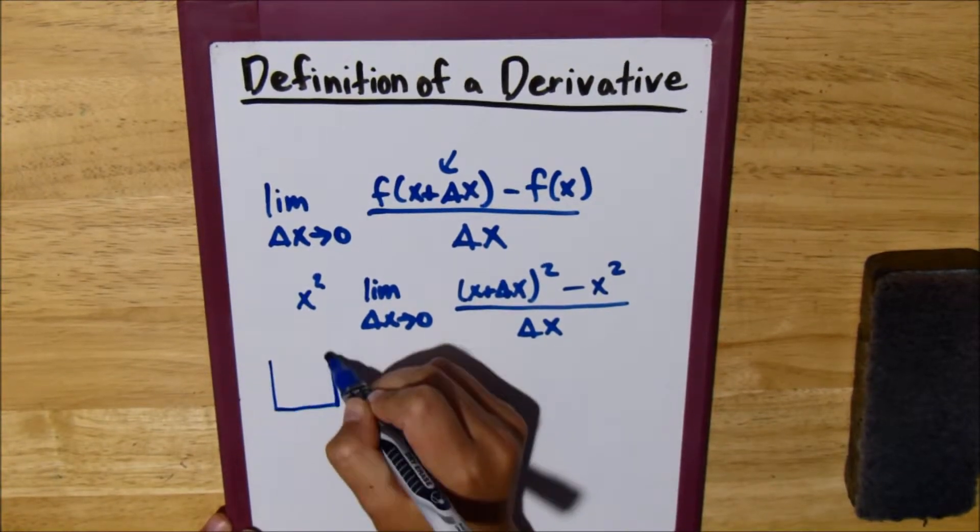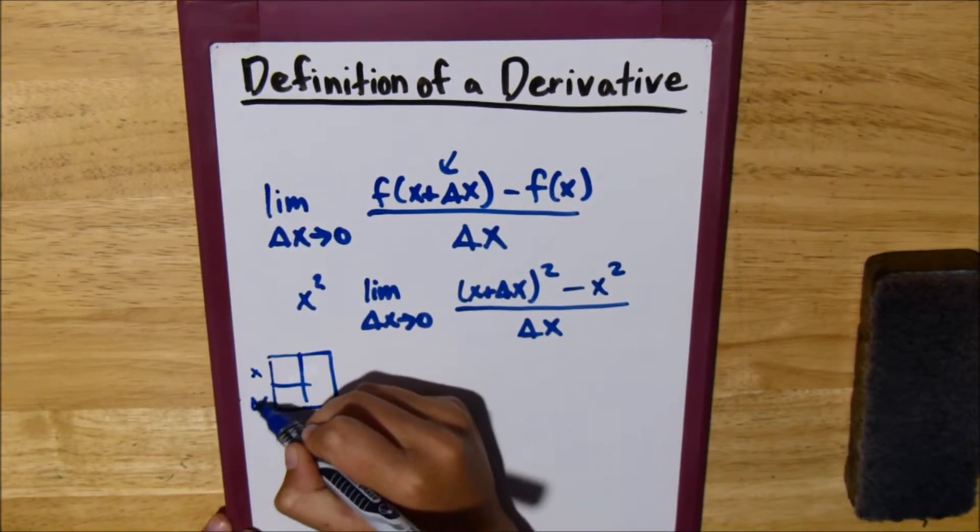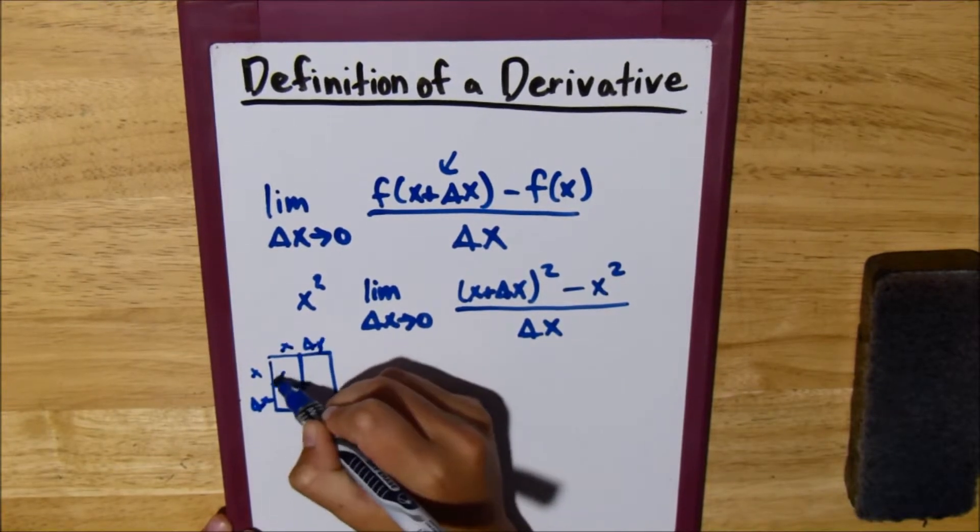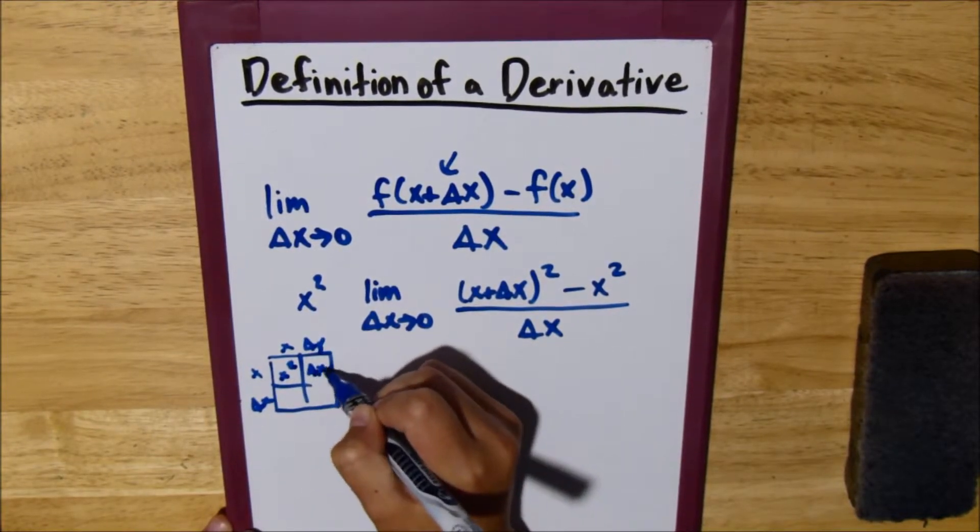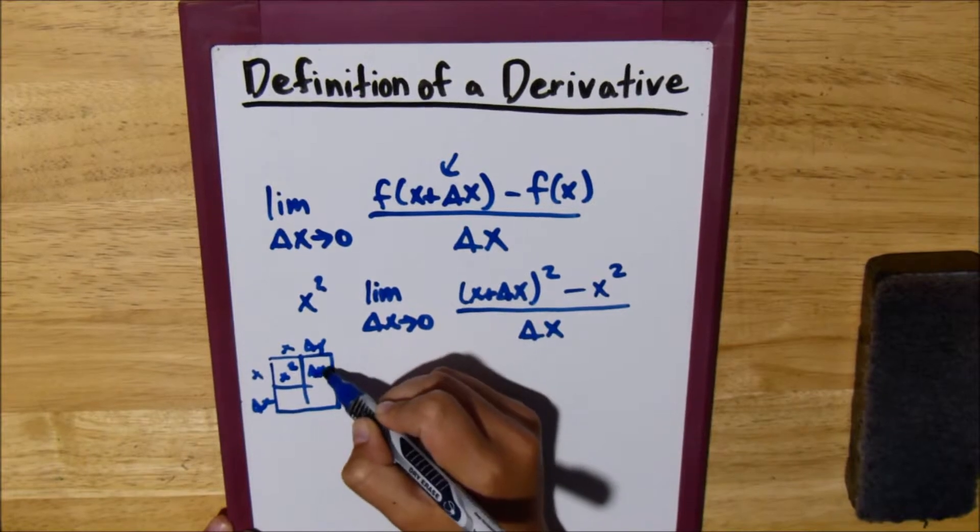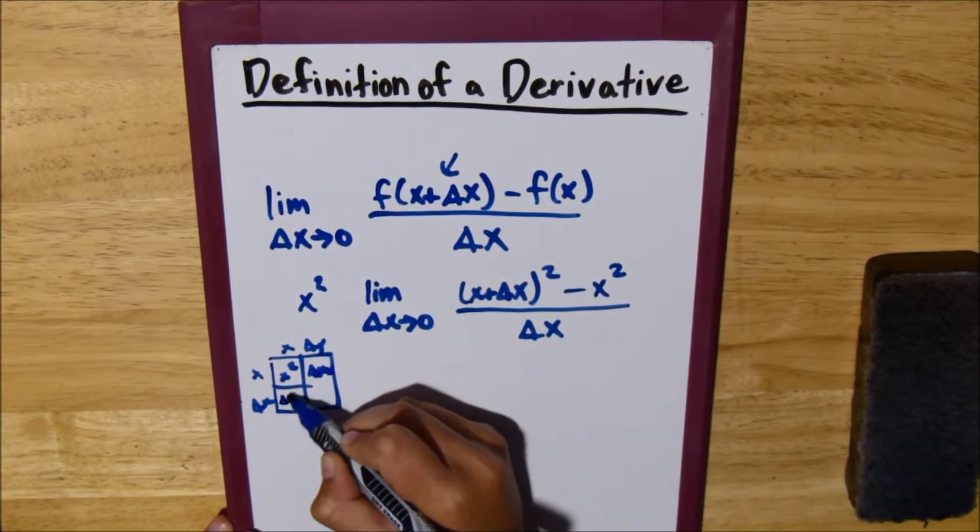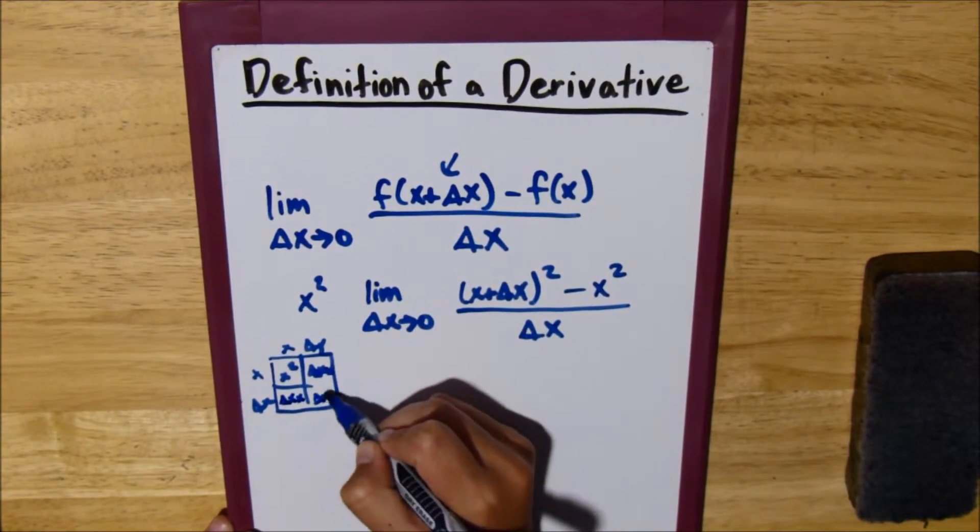So, we'll just draw out the little box: x, delta x, x, delta x. X squared, delta x squared, delta x times x, delta x times x, and delta x squared.